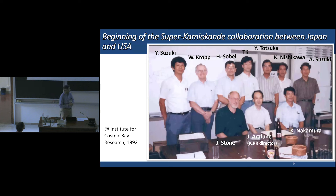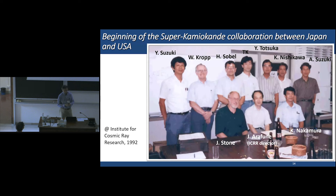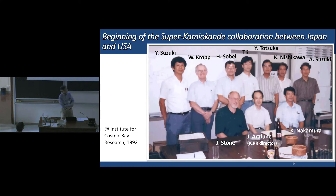This photo was taken at the Institute for Cosmic Research in 1992. At that time, we had a discussion on the international collaboration between Japan and the United States for Super-Kamiokande. This was a very intense meeting, but finally we agreed to work together, and we were happy with this agreement — as you can see, there are many bottles of beer.